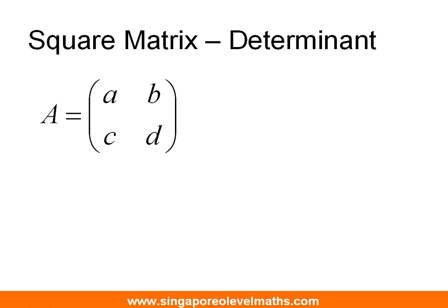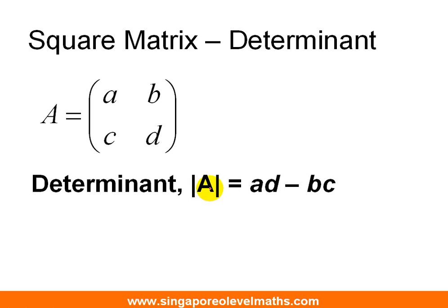So the first thing you need to know is how do you find the determinant? What is a determinant of a square matrix? It's actually governed by a formula. Now do also take note, determinant can also be represented in this manner, which is equals to the product of AD minus BC.